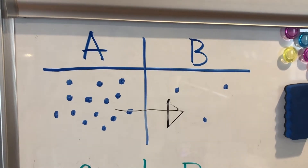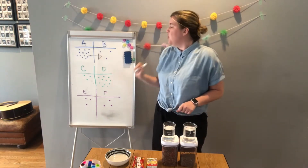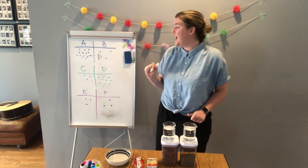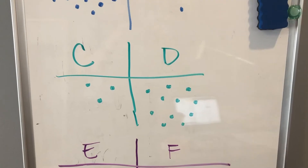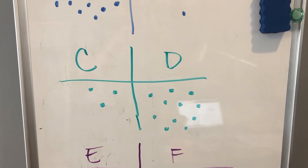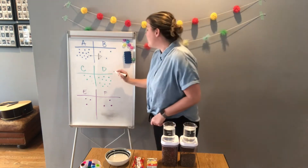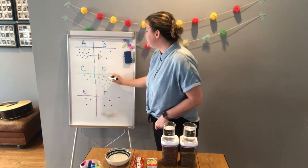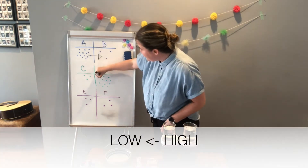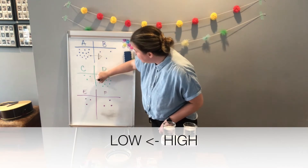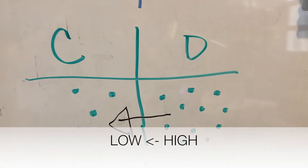How about with C and D? Where is there a high concentration? D — so molecules are going to move from D to C, from an area of high concentration to an area of low concentration.